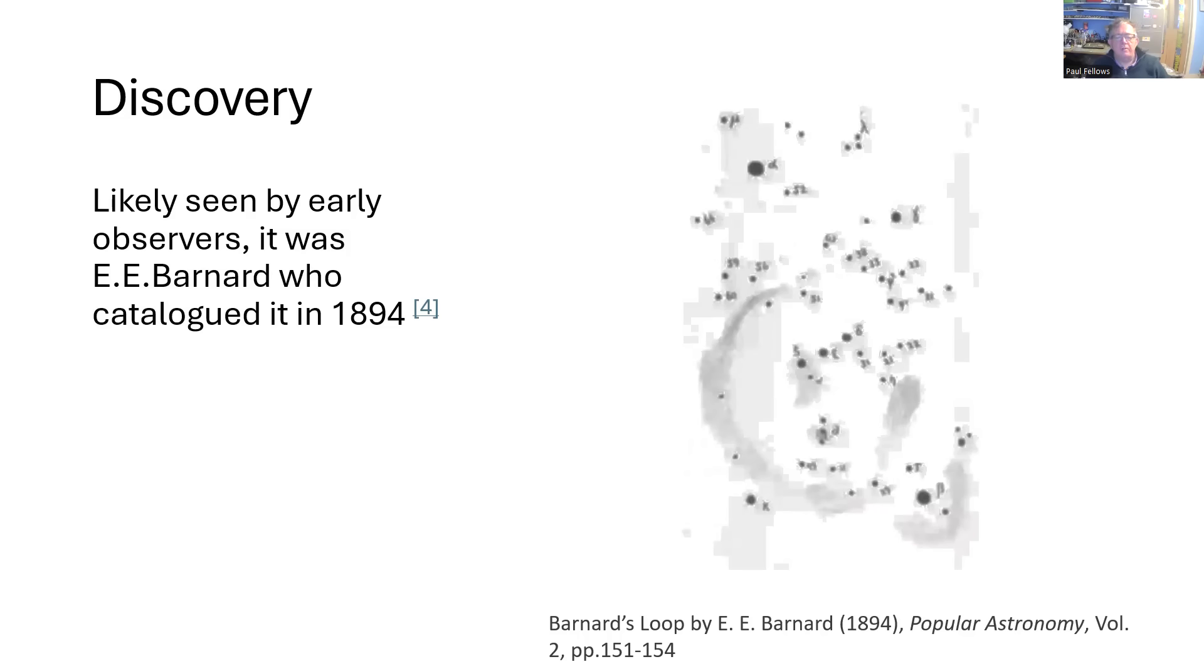And this is a drawing from the publication Popular Astronomy in 1894. So it goes way back and you can see Barnard's Loop outlined there in the rendition. It's not the best photograph. It's actually a drawing and it's quite amazing that it's really quite accurate.